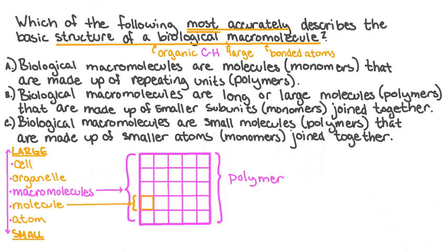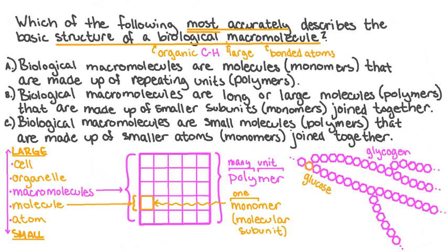Many macromolecules are also considered to be polymers. Poly is a word part that means many, and mer means unit. And those molecular subunits that make up the polymer are referred to as monomers. Mono is a prefix that means one. A good example of this is a macromolecule called glycogen. Glycogen is a carbohydrate polymer made of many repeating subunits bonded together. The monomers that are bonded together to form glycogen are glucose molecules.